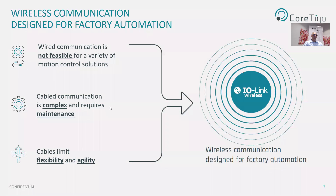The industrial space today is still limited in many senses due to the enormous amounts of cabling required for communication at the manufacturing floor and the machine level. Wired communication is not feasible for many motion control solutions that are moving and rotating rapidly. Cables lead to maintenance and unplanned downtime due to wear and tear, and also lead to complex deployments that are not cost-effective.